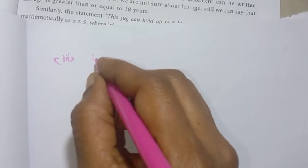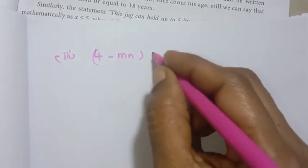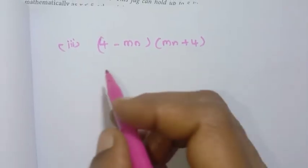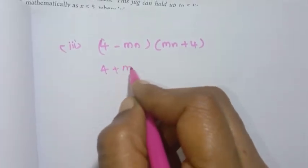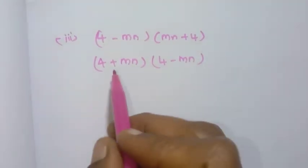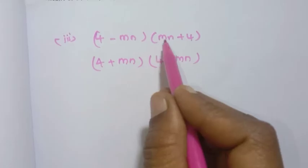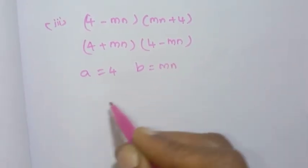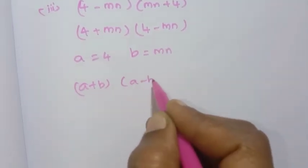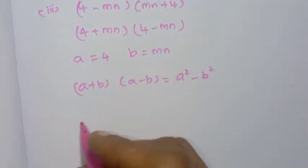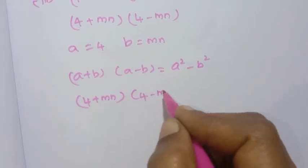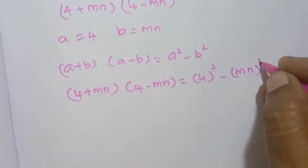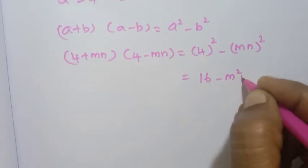Third sum: 4 minus mn into mn plus 4. We rewrite as 4 plus mn into 4 minus mn, matching a plus b into a minus b with a equals 4 and b equals mn. So 4 plus mn into 4 minus mn equals 4 squared minus mn squared, which equals 16 − m²n².